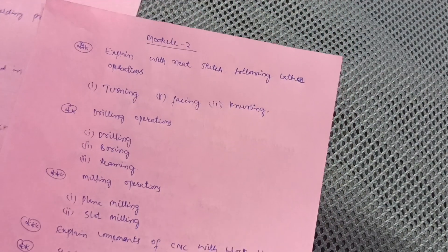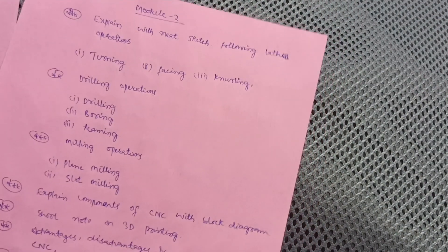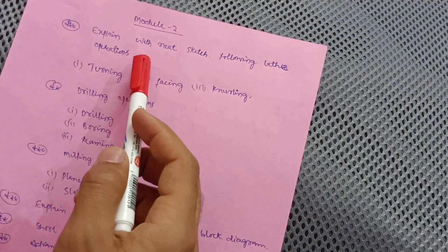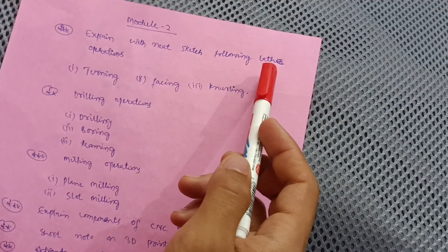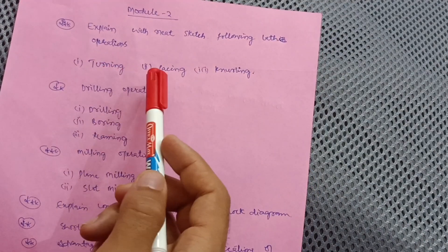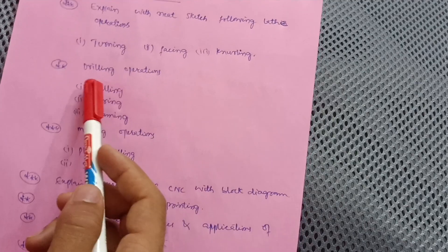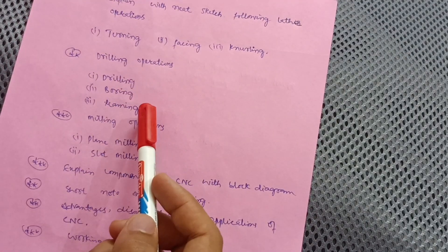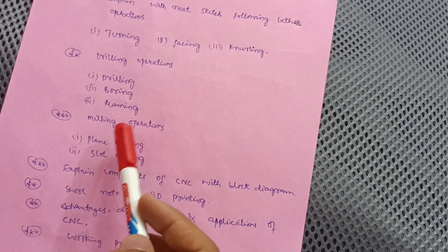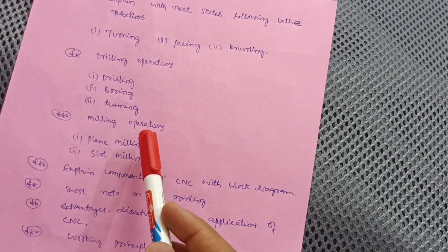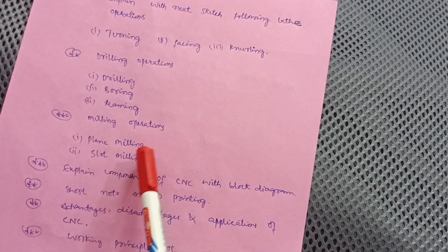Module 2 is also simpler and you need to focus on the diagrammatic part more than theory. Explain with neat sketch lathe operations like turning, facing, and knurling. Drilling operations like drilling, boring, and reaming. Milling operations in which you have to cover plain milling and slot milling.